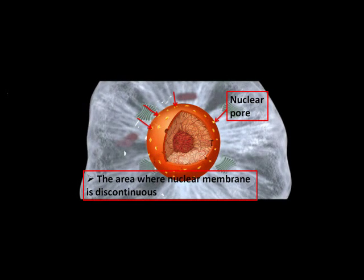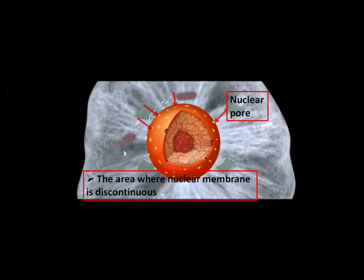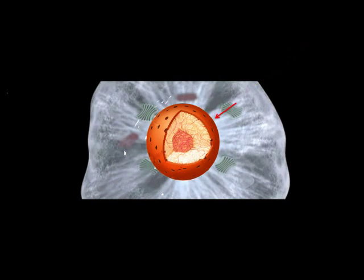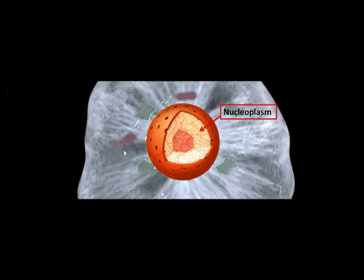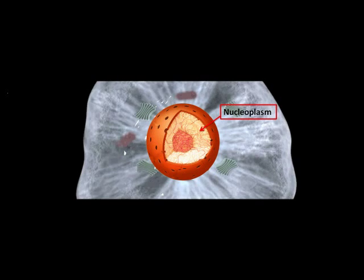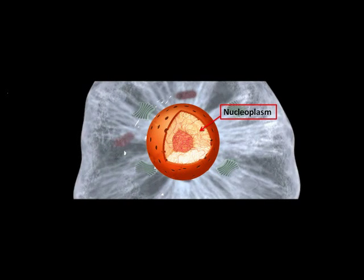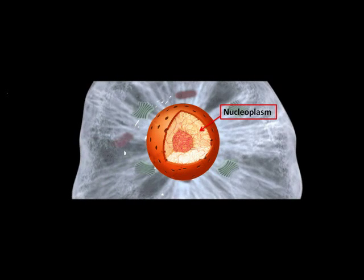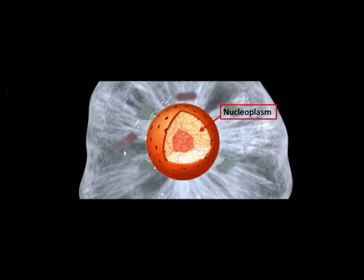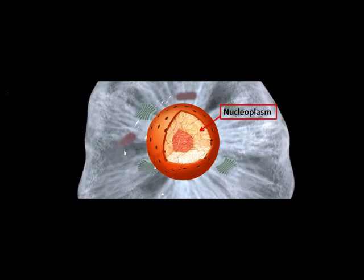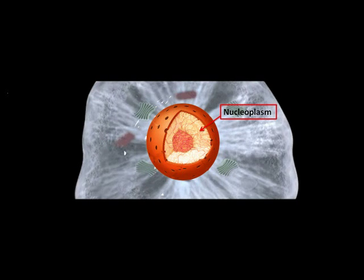Next, observe the color change of nucleoplasm. Nucleoplasm is a colorless dense sap present within the nucleus. It contains enzymes, proteins, raw material, and ions for the synthesis of nucleic acids, i.e., DNA and RNA.